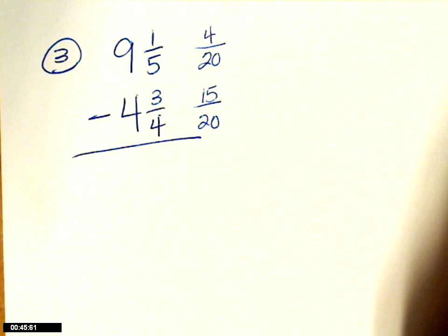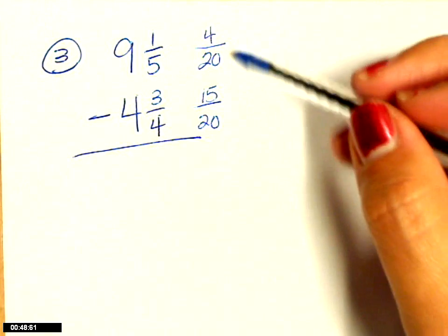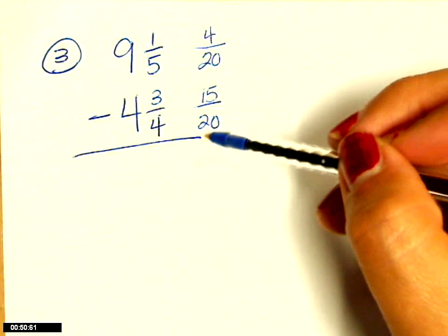Questions about this so far? Okay, now I have nine and four-twentieths minus four and fifteen-twentieths.